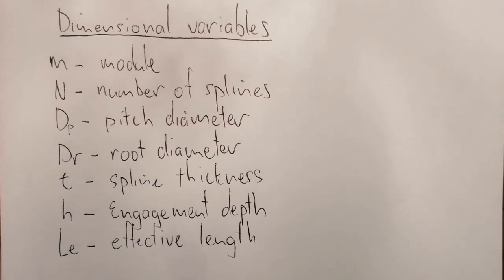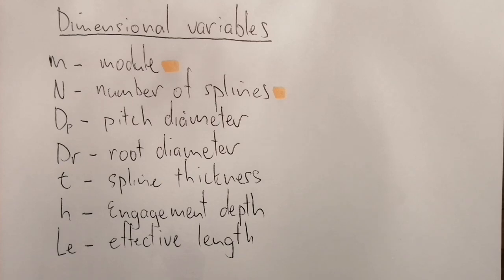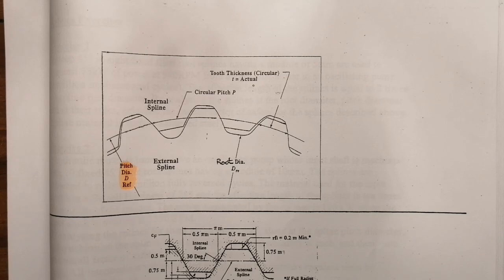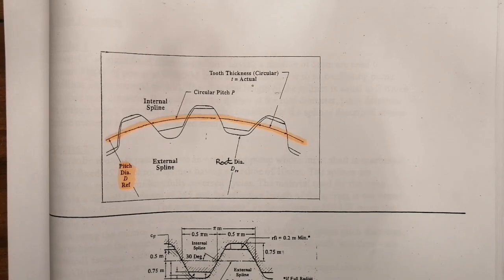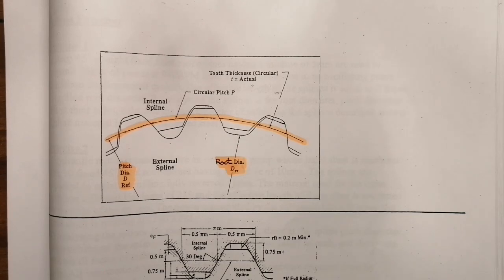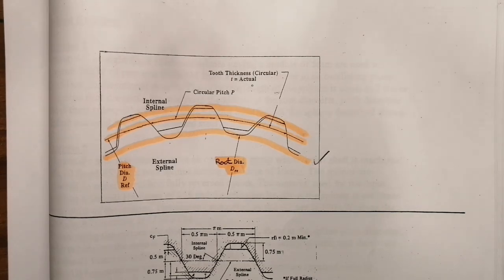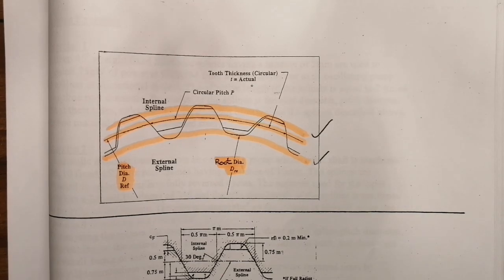The number of splines is based on the number of splines around the circumference. The pitch diameter is found centrally on the spline profile. The root diameter is found at the bottom of the spline, as seen in the diagram. The spline tip diameter is found at the outer edge of the spline teeth.